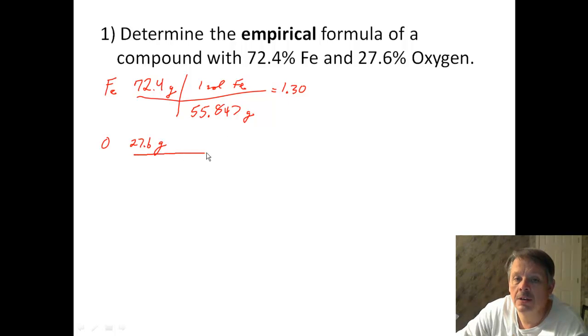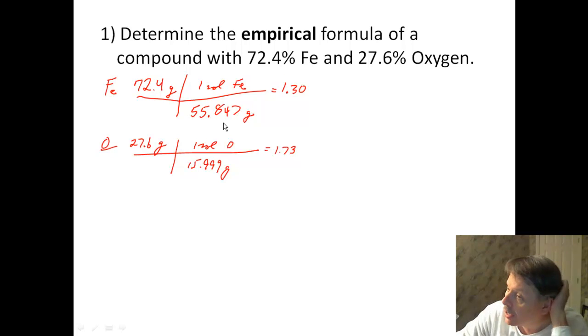If I do exactly the same thing with oxygen. So this is grams of oxygen. I'm using my units over there. And that's 15.999 grams of oxygen in one mole of oxygen. Well that gives me 1.73. Well now, the first thing that we did was we converted percents to grams. And then we took the grams and we converted it to moles. And now we're taking the moles and we're dividing by the smallest one.